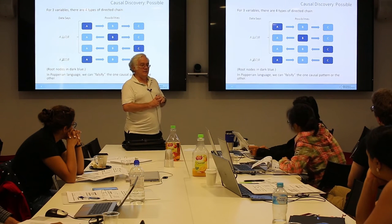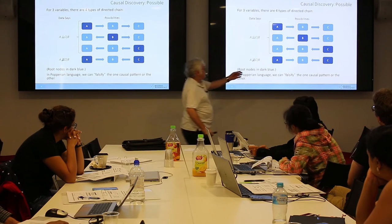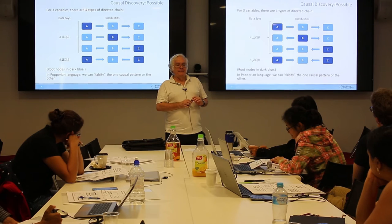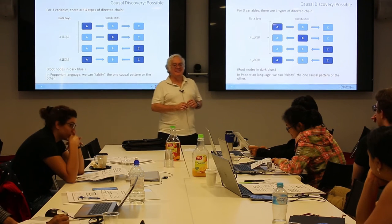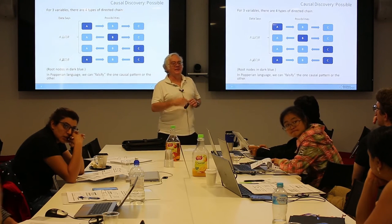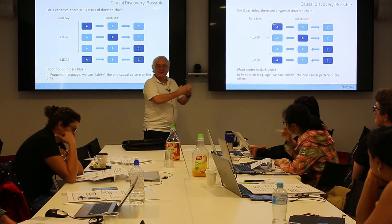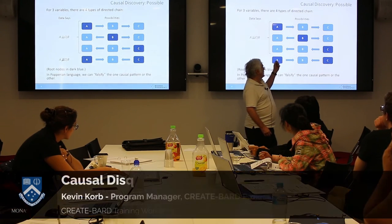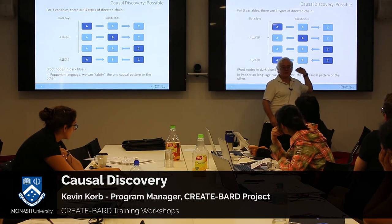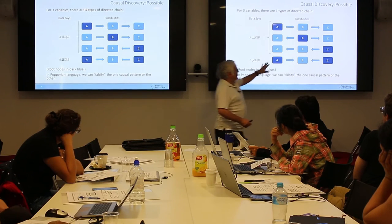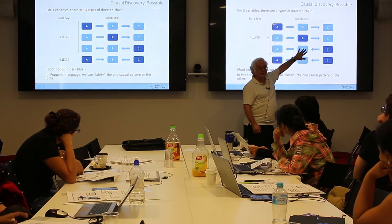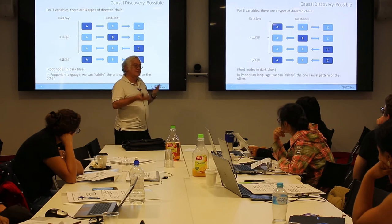The dependency signatures of the different graph structures are exactly opposite. In chains and common cause, you have marginal dependence between the end nodes. In common effect, you have marginal independence — looking at them in isolation, A and C are independent. But when you observe B, they become dependent. This is called explaining away: if you have two diseases with a common symptom, knowing the symptom means if one disease becomes more likely, the other becomes less likely. So you have an observation-induced dependency — the opposite dependency structure.